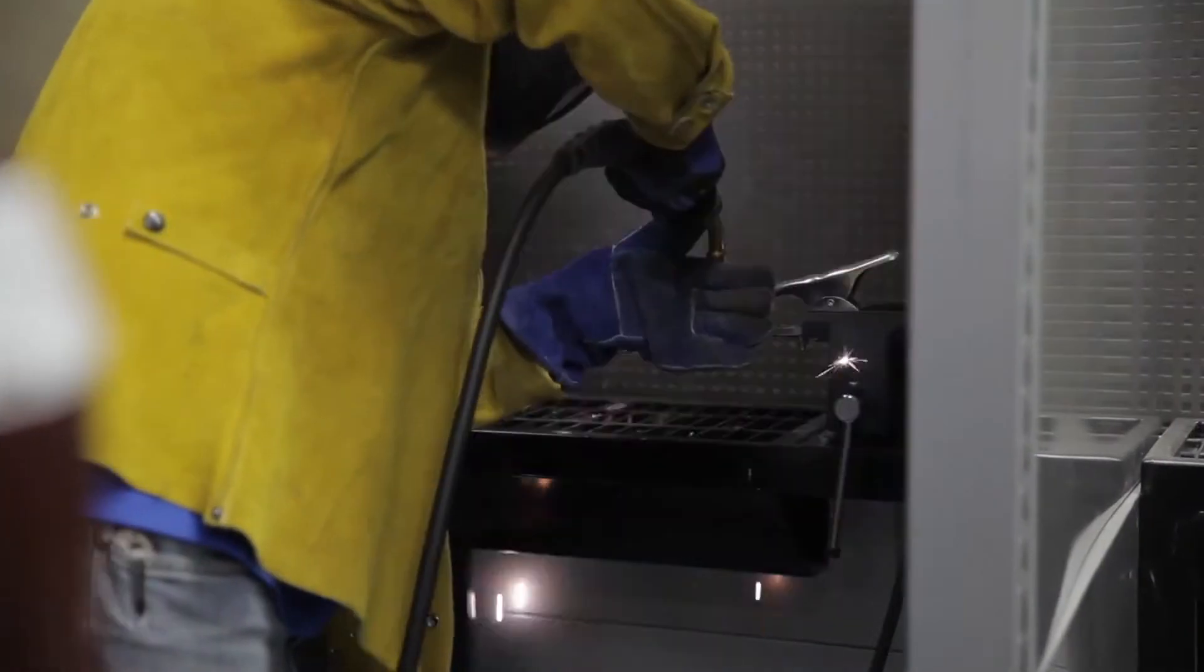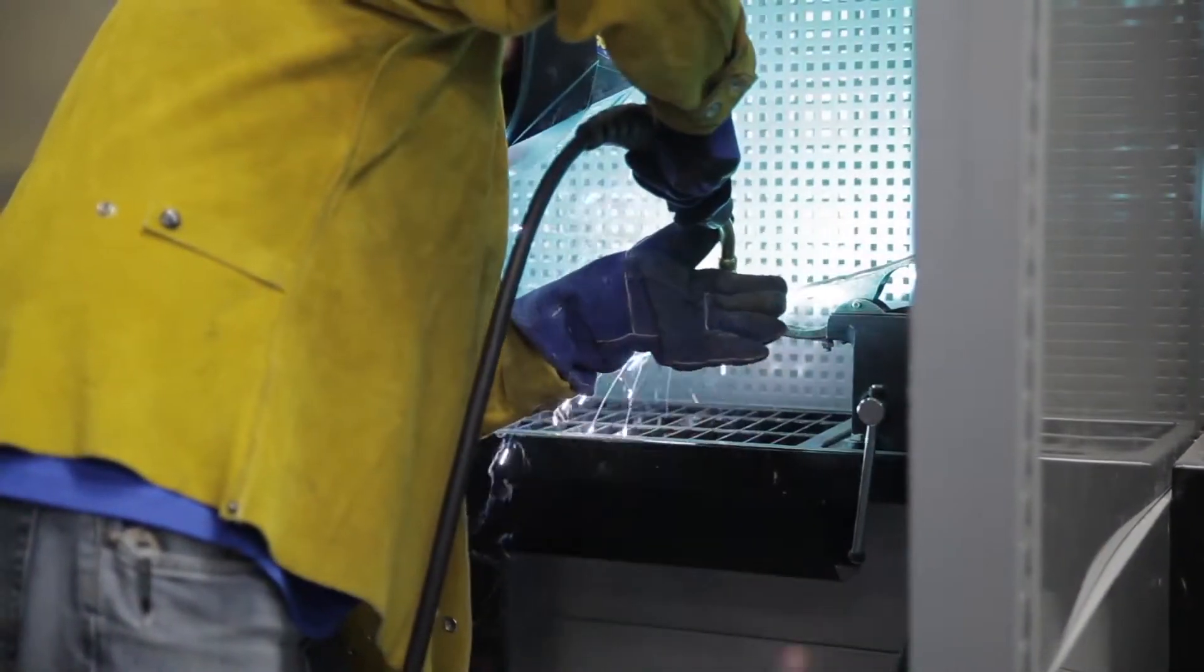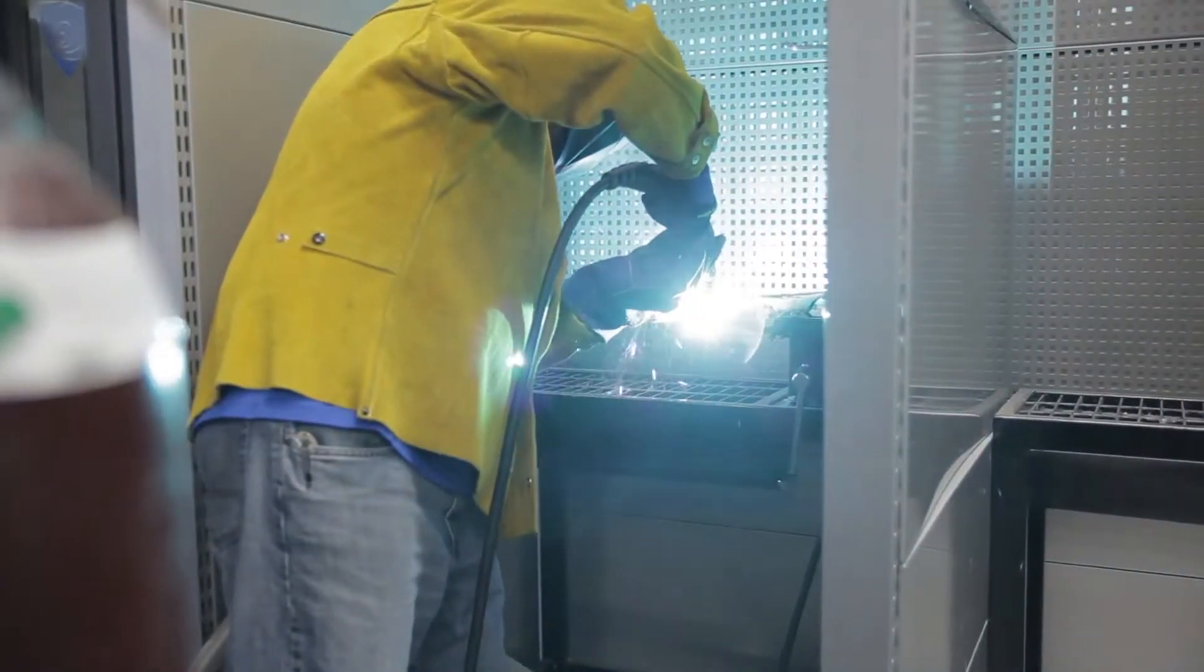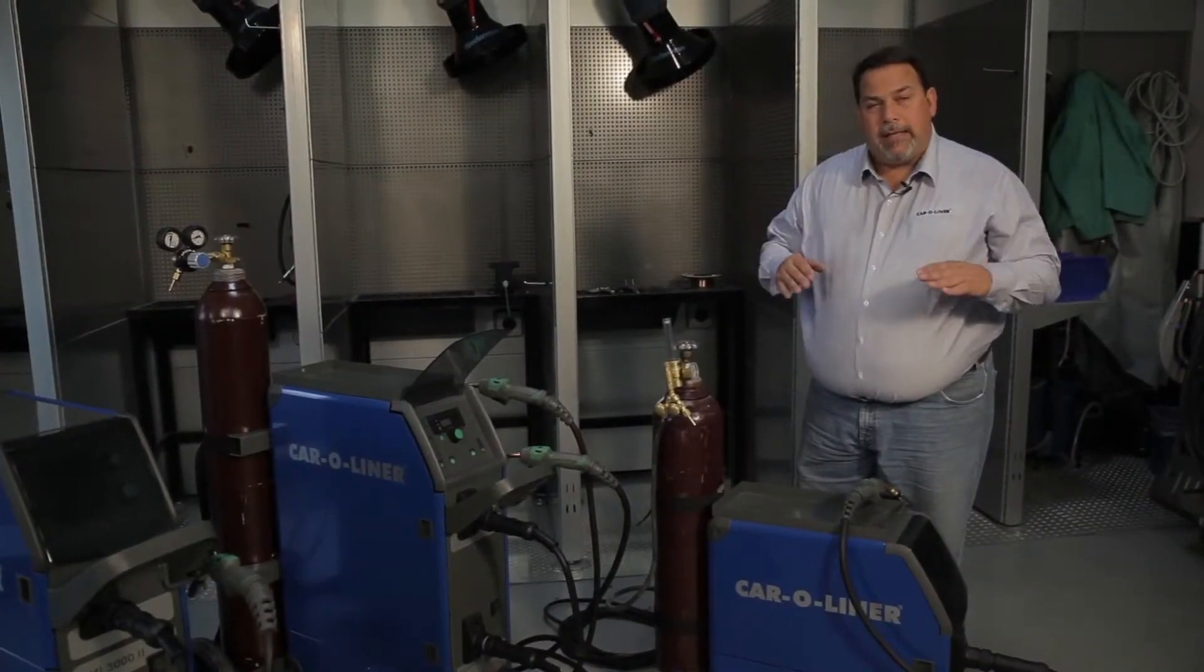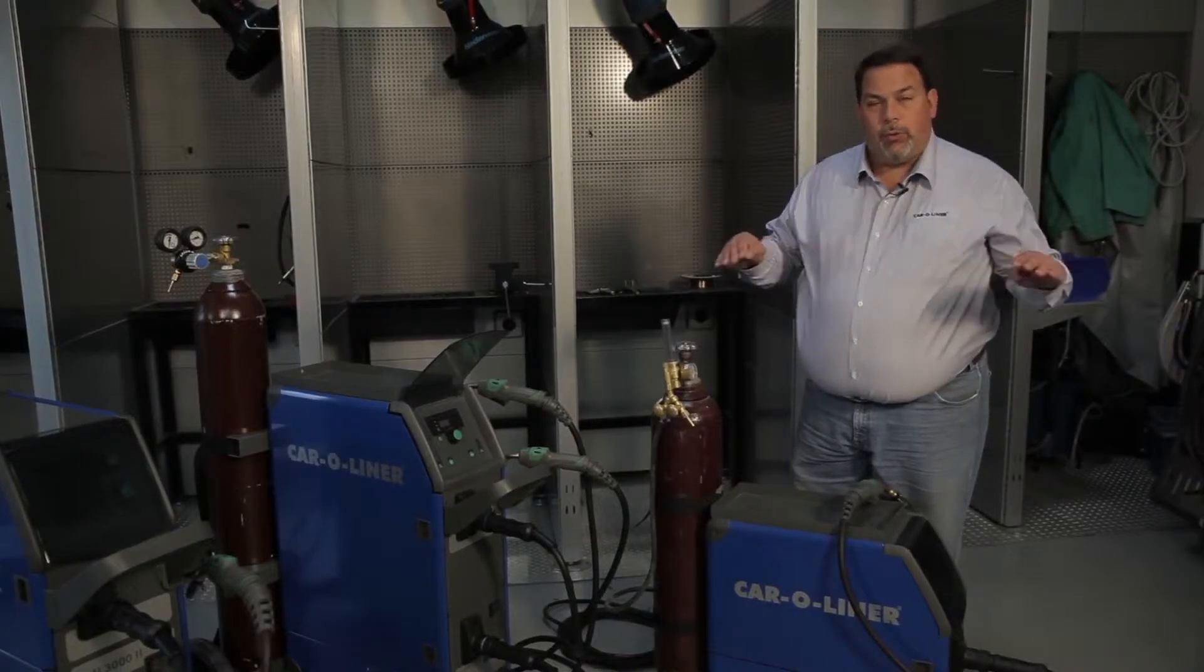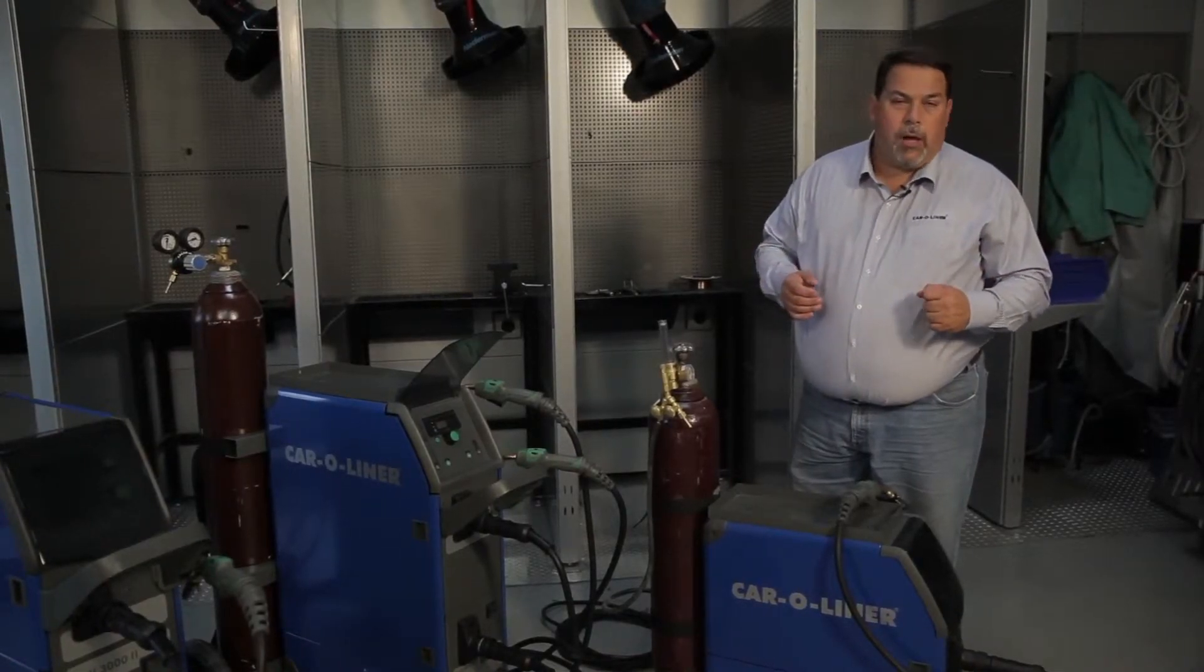Instead of a normal short circuit like we do with steel welding, we do a spray pulse that allows us to actually propel the droplet across the arc and be able to bring the heat down and be a much cooler weld without impacting the metal as much.